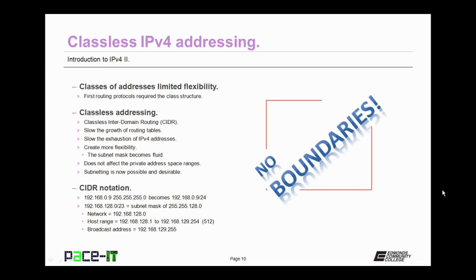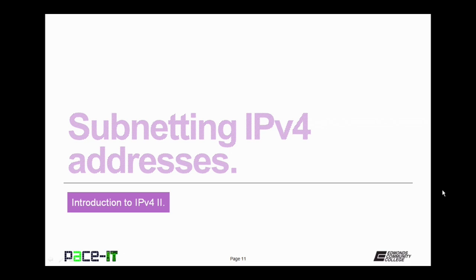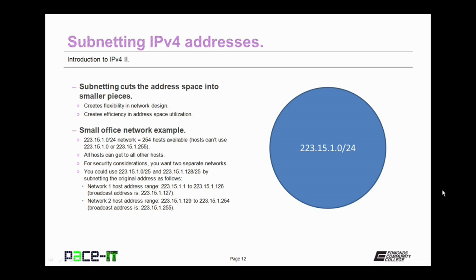The broadcast address for that network would be 192.168.129.255. Now let's move on to subnetting IPv4 addresses. Subnetting cuts address spaces into smaller pieces — it takes one range of addresses and splits it. This creates flexibility in network design and efficiency in address space utilization.